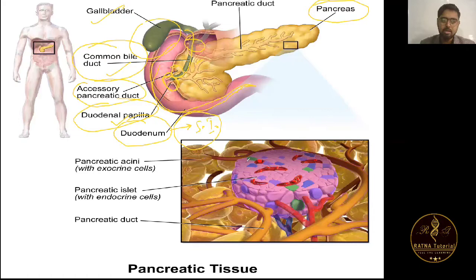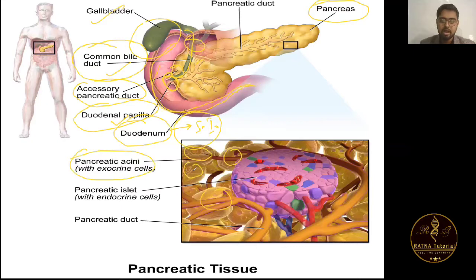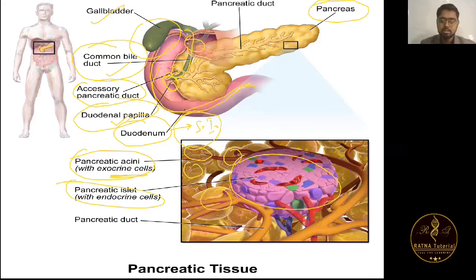Looking in more detail at pancreas cells: the disc-like structures visible are called pancreatic acini, and they are exocrine in nature. The purple-colored part is the pancreatic islet, also known as the Islets of Langerhans, and this is endocrine in nature.